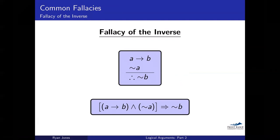Coming next is the fallacy of the inverse. I've got premise one, premise two, and a conclusion in the same format. I start off by saying 'if I've got A then I have B.' Someone then says 'well, you don't have A, so you can't have B' — and that is not true, it just doesn't work. You don't always get true. So it's an invalid argument — it's a fallacy.